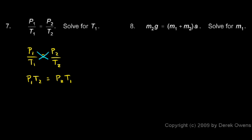And we're told to solve this for T1, so in order to isolate T1, I need to divide both sides by P2. And then the P2s cancel out, leaving me with T1 all by itself. And T1 ends up being equal to P1 times T2 over P2.